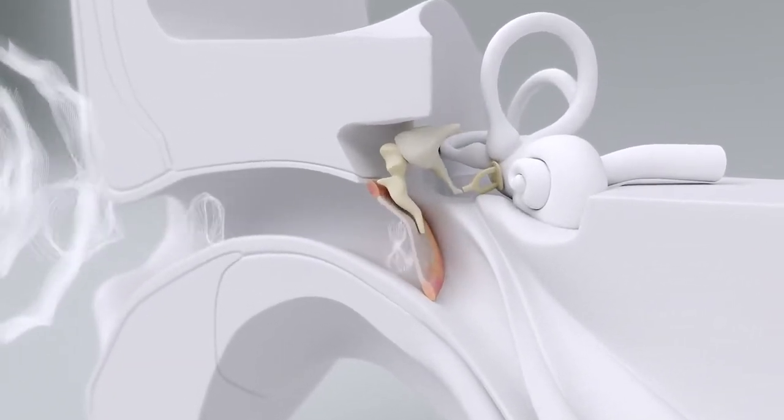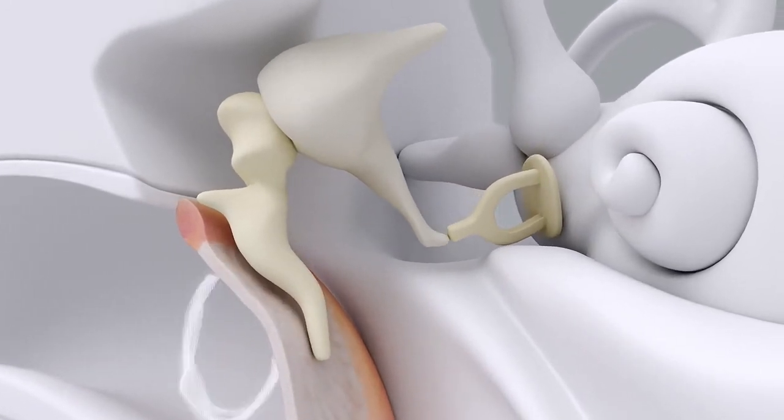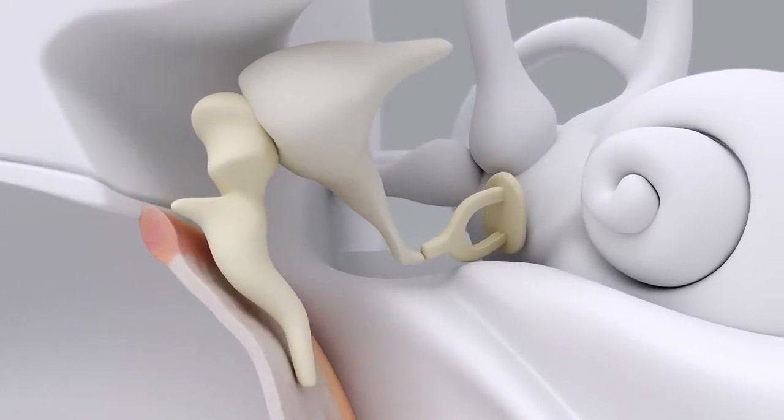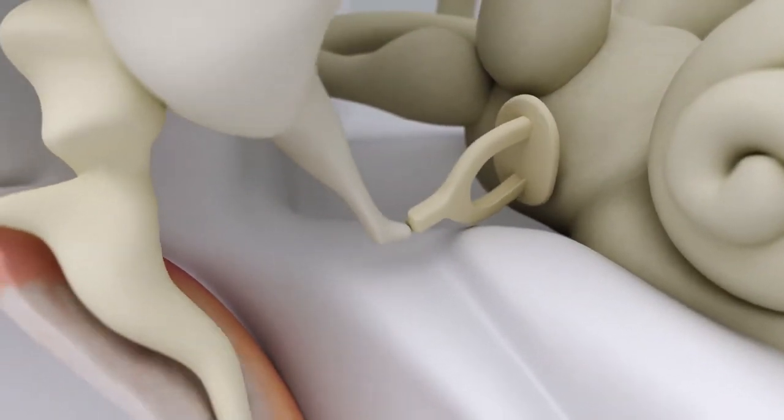These form a bridge from the eardrum to the entrance of the inner ear. Their interaction increases and amplifies the sound vibrations further before these are relayed fully into the inner ear via the oval window.